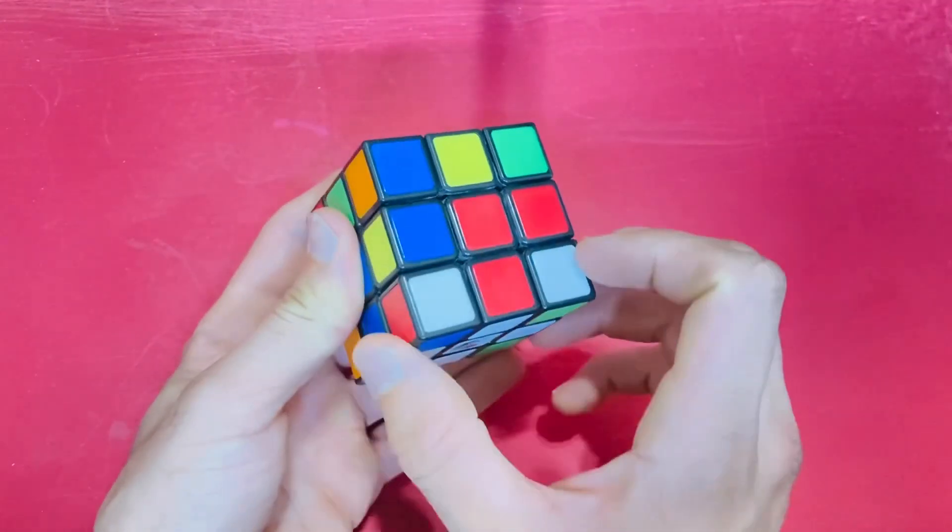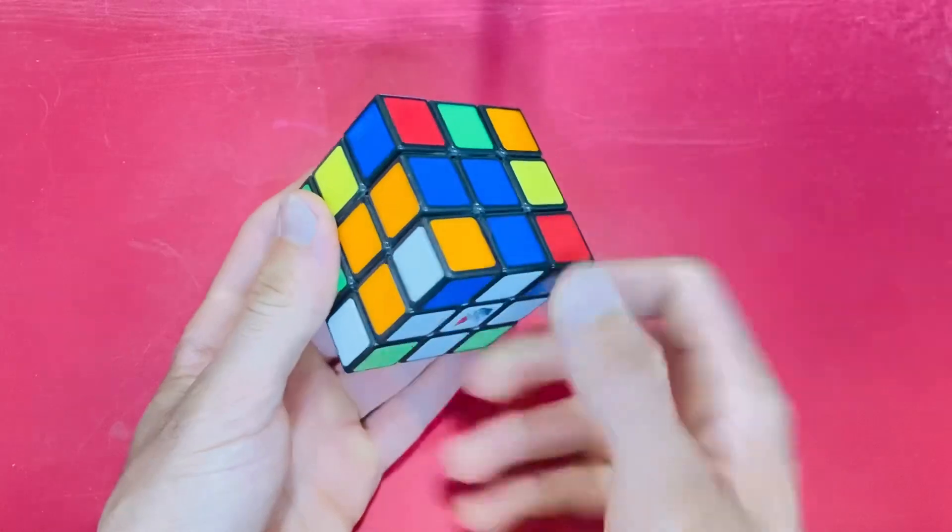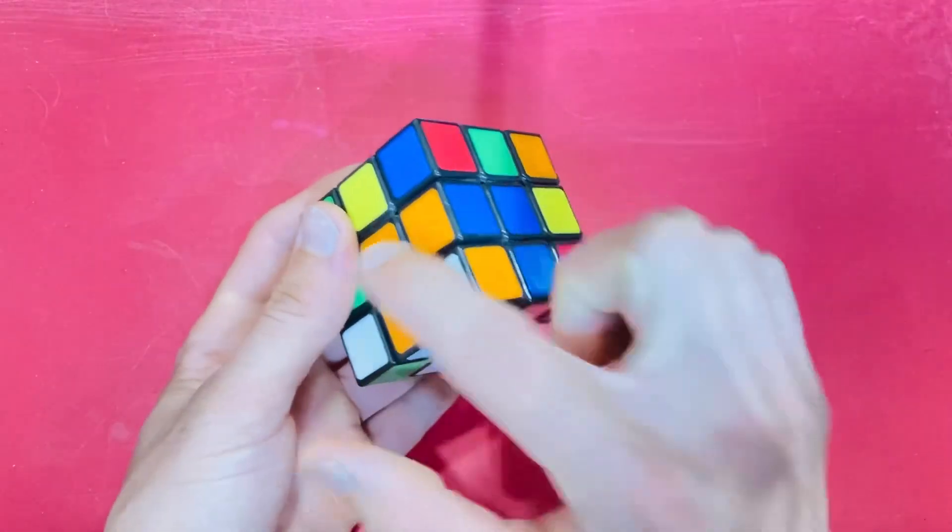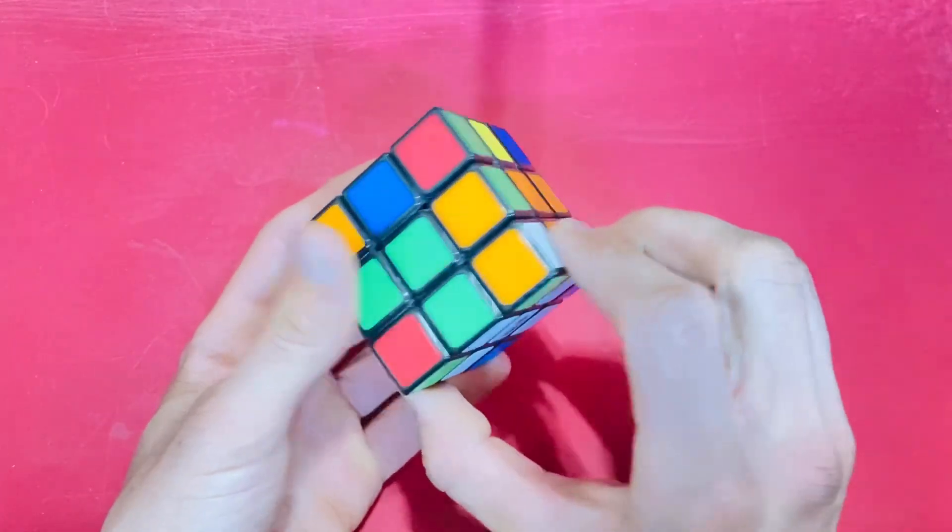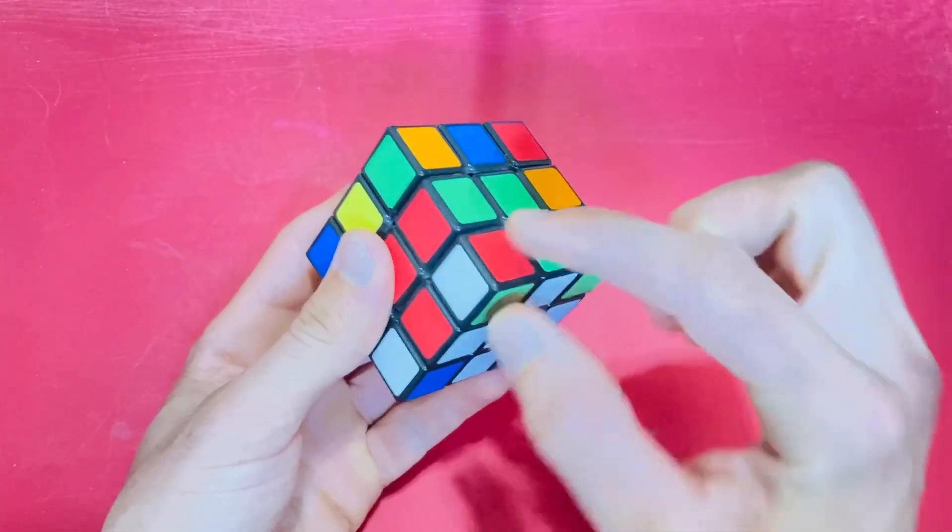And if you have completed all four corners, you are done with this step. Take a quick look around the cube and make sure that each corner is in the right location by looking at the colors on the corner in relation to the centers around it.